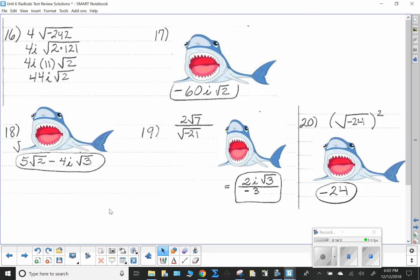Number 16. I got a negative under the radical, so the i comes out. Then, I'm going to break the 242 apart into 2 times 121, because then I can get an 11 out. 11 times 4 is 44. 11 times 4 is 44 i root 2. Write things as a + i radical b. In its simplest radical form.